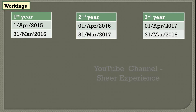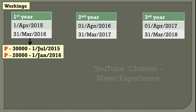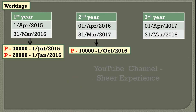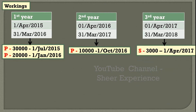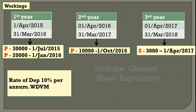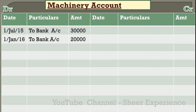In the first financial year we purchased two machines: one on 1st July 2015 for $30,000 and another on 1st January 2016 for $20,000. In the second financial year we purchased one machine on 1st October 2016 for $10,000. In the third financial year we haven't purchased any machine, but sold one-third of the first machine for $3,000. Don't forget this point.